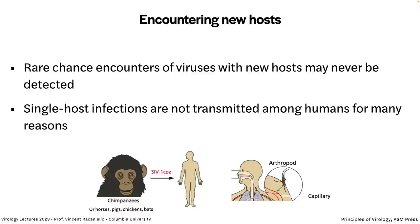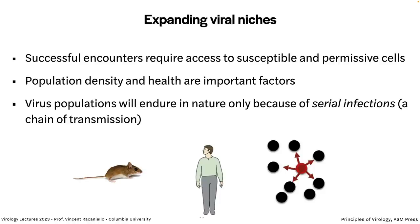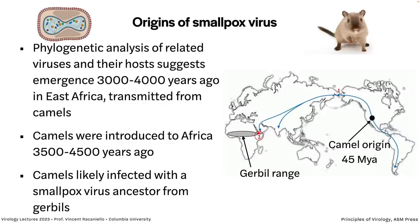There are lots of encounters of viruses with new hosts. HIV-1 came from four independent spillovers of a chimp virus into humans, but these spillovers are probably happening all the time and mostly go nowhere. These infections may not transmit among hosts because there's not enough virus, or the virus isn't the right genotype to transmit. When a virus enters a new host, it needs access to susceptible and permissive cells. Population density is really important for onward transmission. Serial human-to-human infections are needed — we had very short chains for SARS-1 but very long ones for SARS-CoV-2.